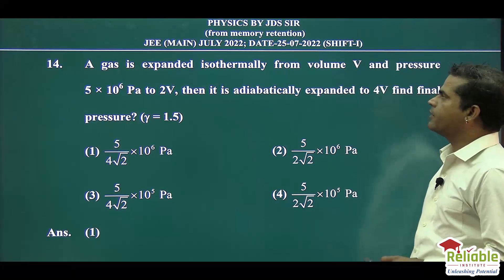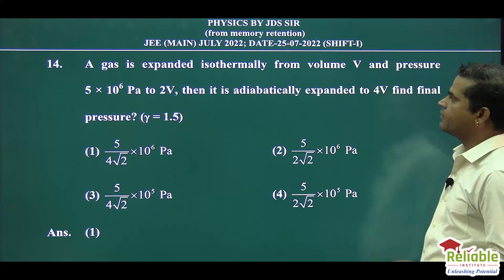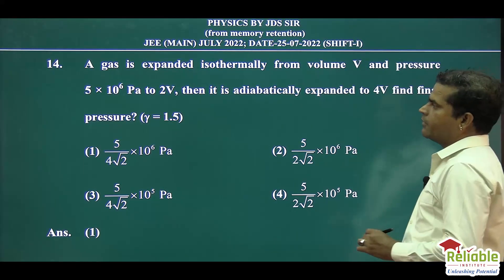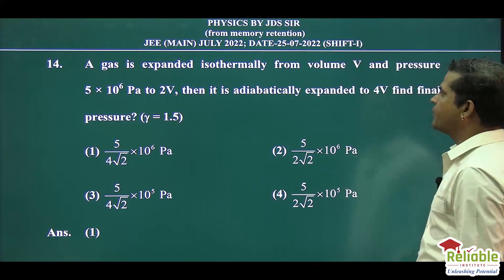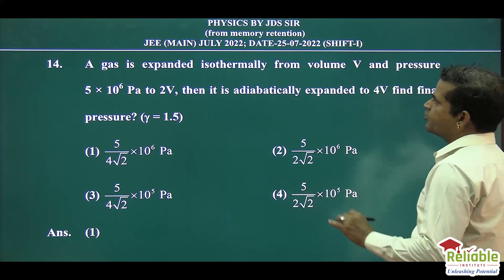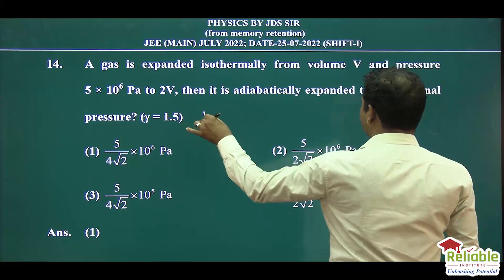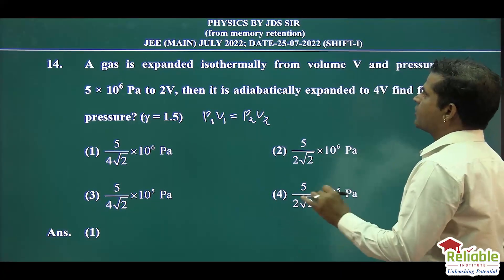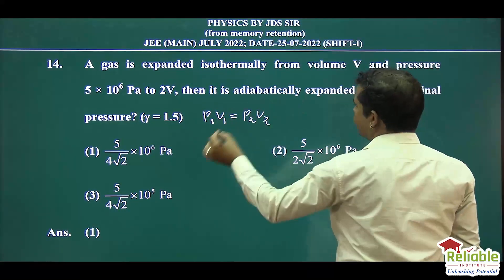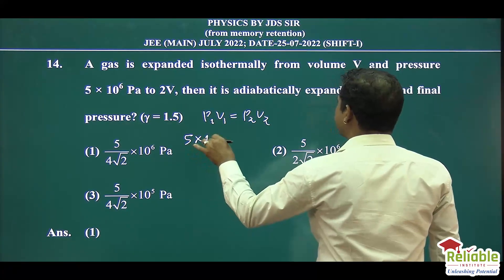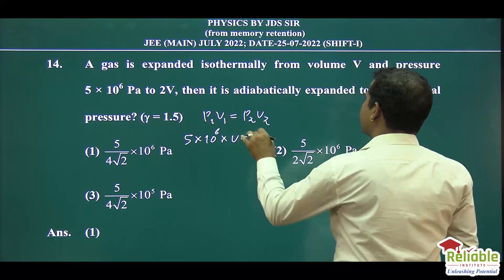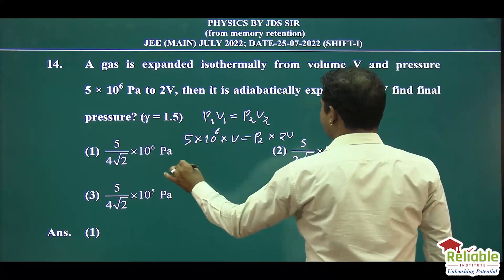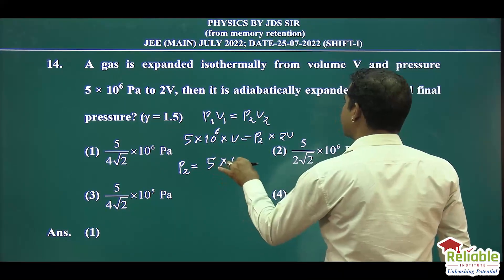Question number 14 is from thermodynamics. A gas expands isothermally from volume V and pressure 5×10⁶ Pascal to 2V, then it is adiabatically expanded to volume 4V. The final pressure and the adiabatic constant gamma is 1.5 need to be found. In the isothermal process, P1V1 equals P2V2. So with initial pressure 5×10⁶ and initial volume V expanding to 2V, the pressure after isothermal process is P2 = 5×10⁶ divided by 2.